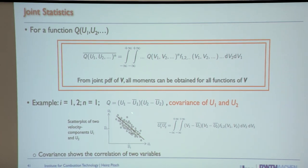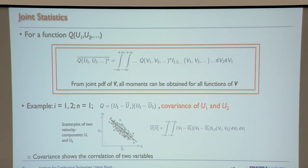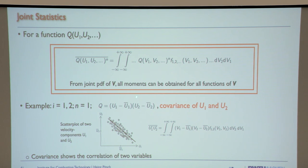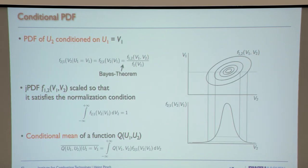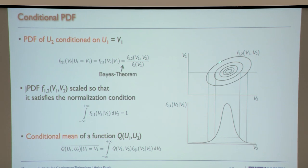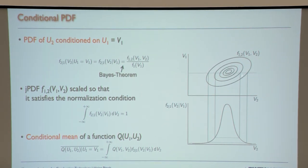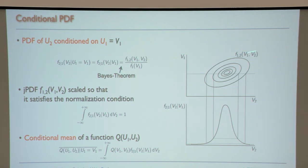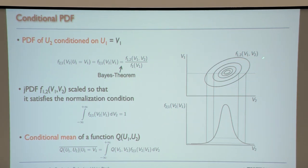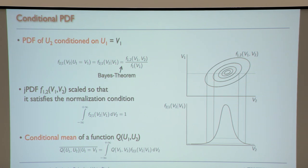An example is the covariance: Q equals (U₁ − Ū₁)(U₂ − Ū₂), and integrating this over the joint PDF gives the correlation function between U₁ and U₂. The joint PDF in two dimensions is shown as a 2D distribution with high and low values, showing a correlation because values along a certain line are more likely.